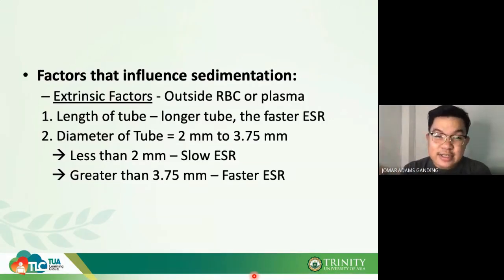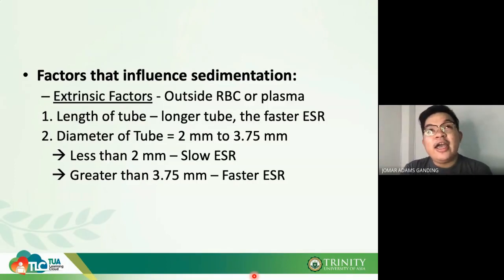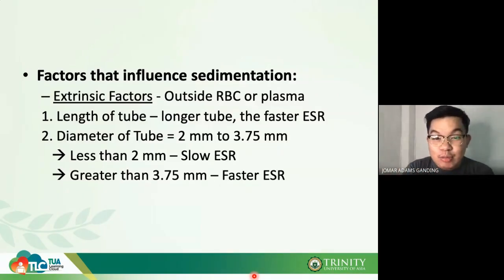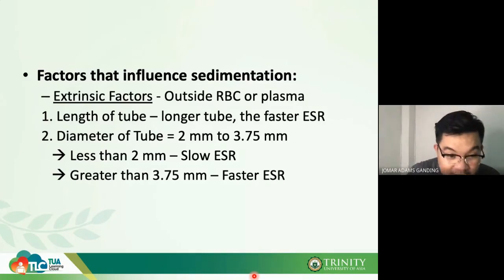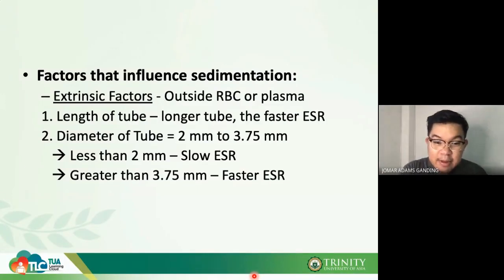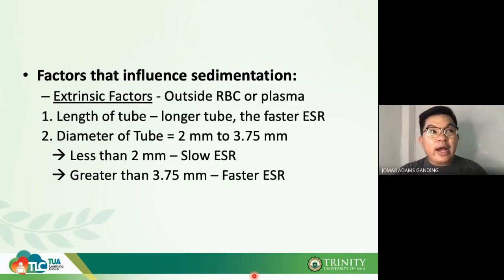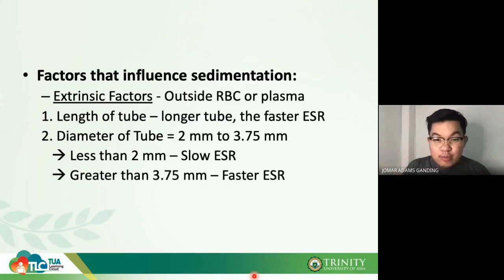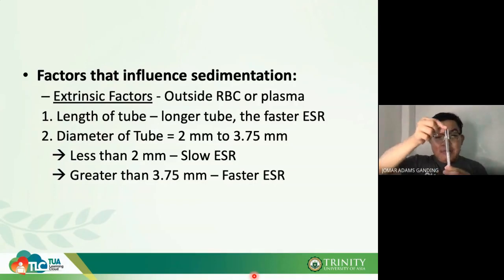Extrinsic factors include: length of tube — the longer the tube, the faster the ESR. Diameter of the tube — the normal diameter is 2 mm to 3.75 mm. A smaller diameter causes slower ESR; a larger diameter causes faster ESR.